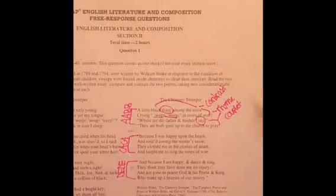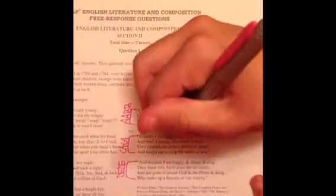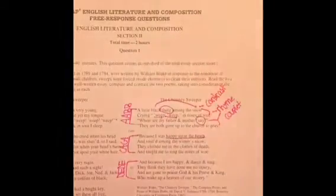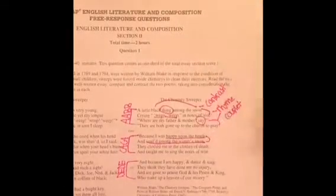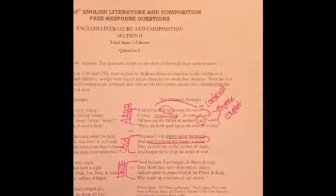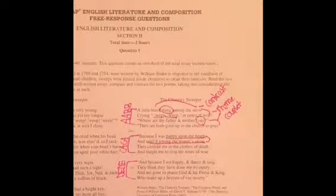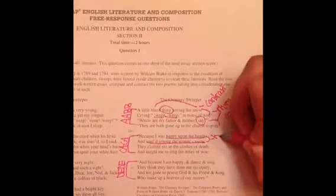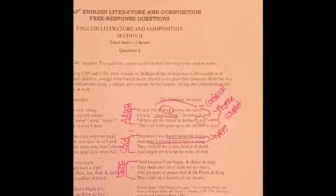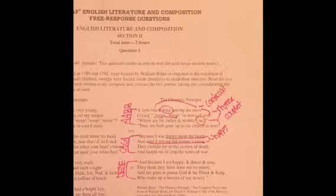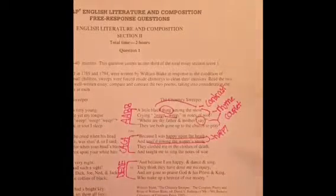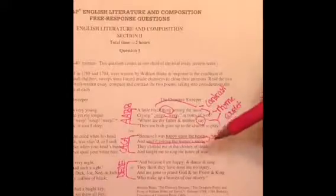For the second stanza: 'Because I was happy upon the heath and smiled among the winter snow' - I believe that these two lines tie right in with the attitude of the poem. At first the child is happy, carefree, and he really does enjoy life. He's optimistic until his parents force him to become a chimney sweeper.